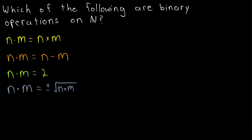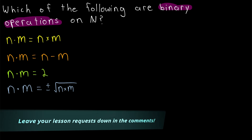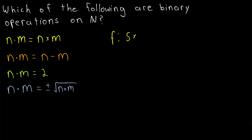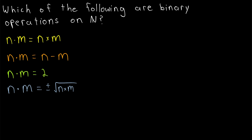In today's Wrath of Math lesson, we'll see some examples and non-examples of binary operations. We went over the definition of binary operations in a previous lesson, and I'll leave a link to that in the description. As a quick recap, remember that a binary operation on a set S is a function from the Cartesian product S×S back to that same set S. In other words, a binary operation takes two elements from the same set and assigns them to exactly one element of that same set. So let's check out a few examples and non-examples.